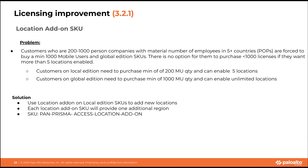The second licensing improvement is a location add-on SKU. Customers can now enable an additional location on their existing subscriptions, going beyond the five locations included with local licenses. The SKU is called 'Prisma Access Location Add-On' and is already available for customers to use.